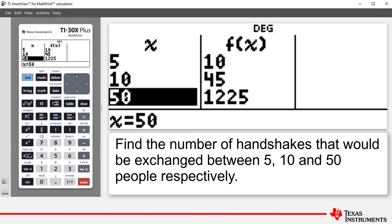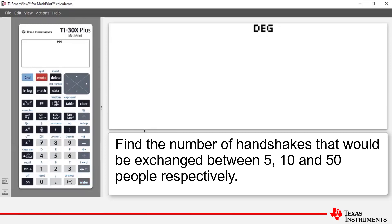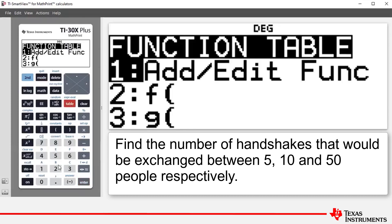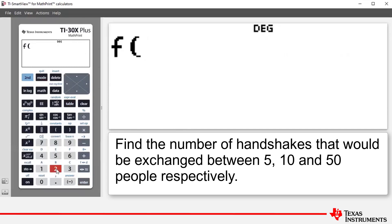To show you a calculation on the home screen, if we press second and then quit to go to the home screen, we press the table feature again and then press number 2. Notice that pastes f( onto the home screen. Now let's enter 50 for example, close brackets and press enter. That's another way of showing the calculation that 50 people end up exchanging 1225 handshakes.